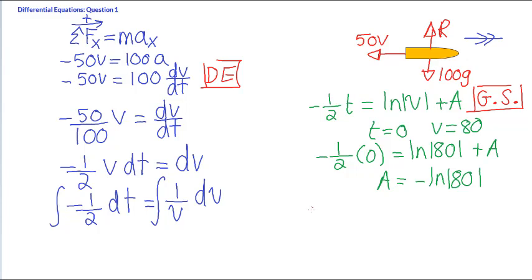The laws of logarithm state that log A minus log B is log A over B. So, we can use that to simplify this side. It's going to be ln V over 80. Like so.